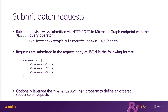Each request within the batch request body contains properties that define the request. You include the HTTP method and the URL in addition to the unique ID number that you assign to each request. You can also include optional headers and body properties in the request for specific HTTP POST requests.